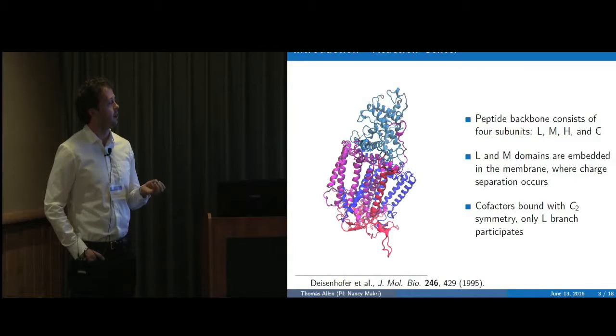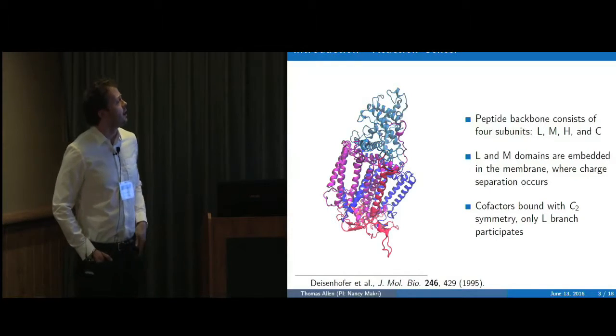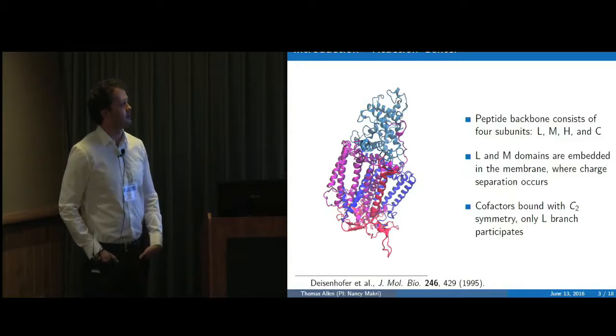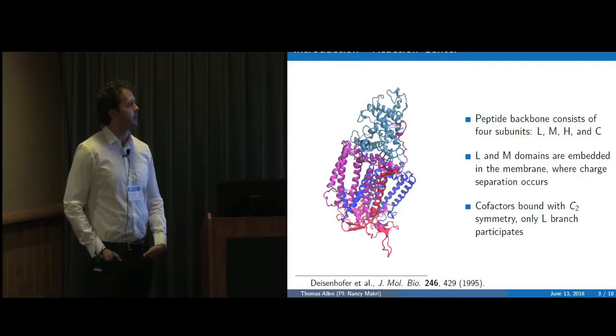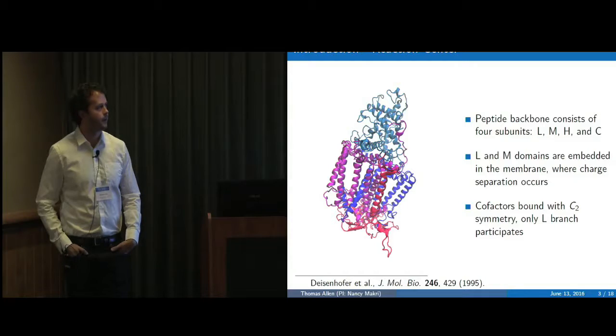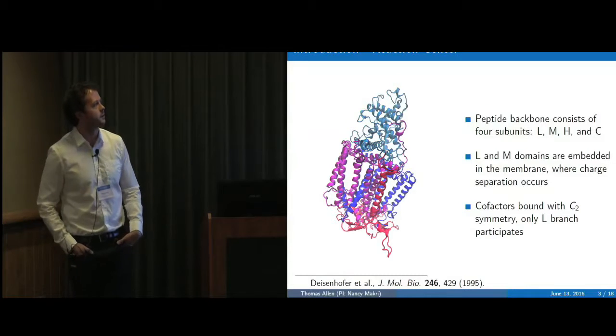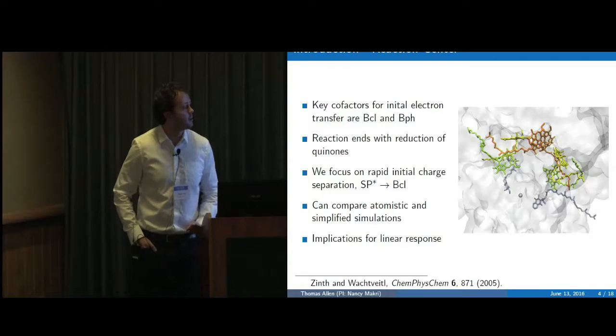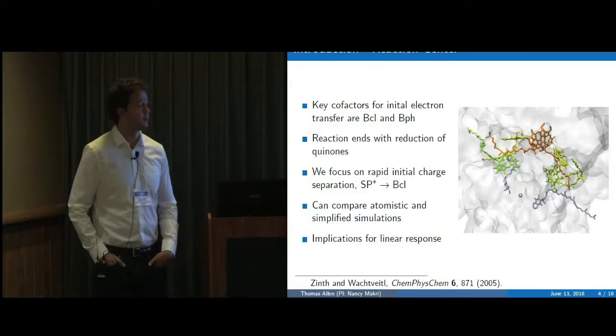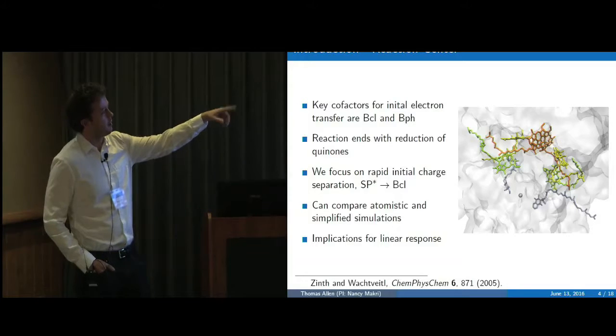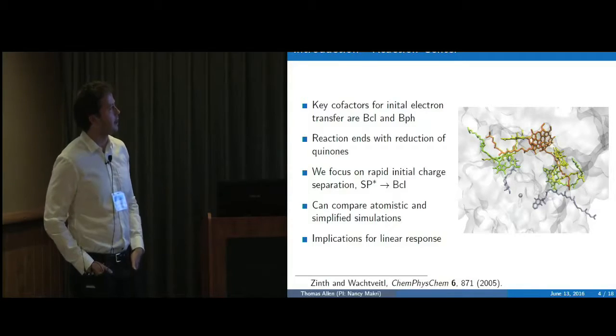And then that electron separates out and kind of hops down the chain. There's a lot of interesting things about this. In particular, the cofactors that you'll see in the next slide, they have a C2 symmetry, an approximate C2 symmetry. But despite that, only one branch actually participates in the reaction. That continues to be kind of an interesting thing about it and people kind of all have their own ideas about why that is. So eventually one day we may be able to look at that too a little bit.